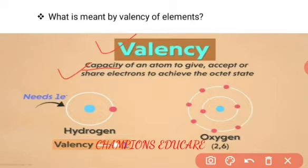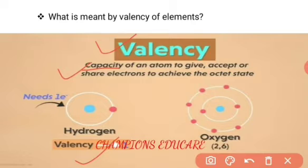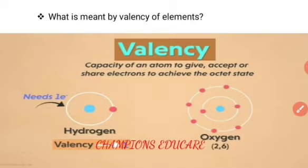Hydrogen has only one electron which goes into the first orbit, but the capacity of the first orbit is two. So hydrogen is not stable because the orbit is not fulfilled. To fulfill the orbit, hydrogen needs one more electron - it accepts one electron for stabilization. So hydrogen's valency is 1. For oxygen, it has 8 electrons: 2 go to the first orbit and 6 go to the second orbit. The second orbit needs 8 electrons to be stable, but only 6 are present, so oxygen needs 2 more electrons. Thus oxygen's valency is 2.